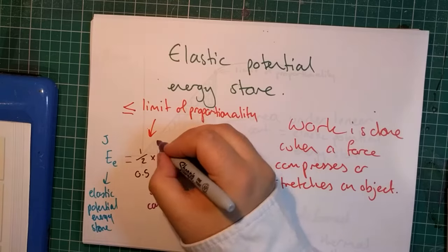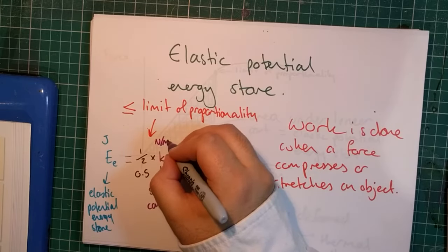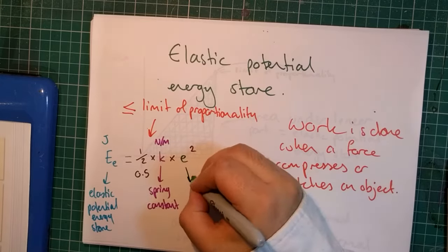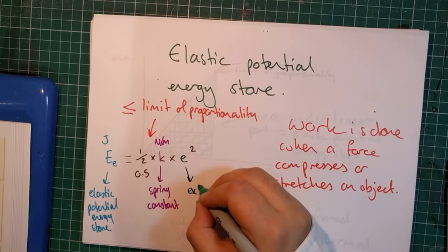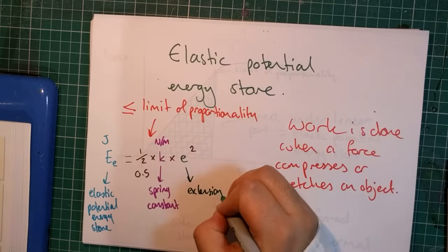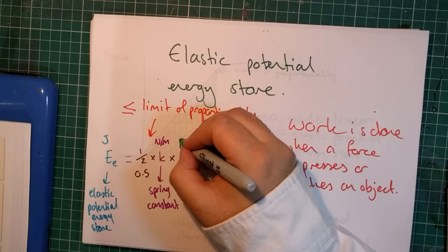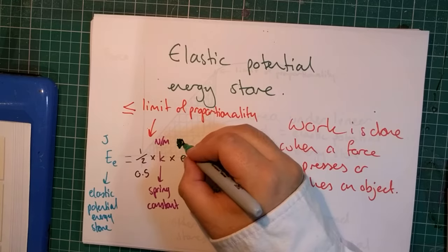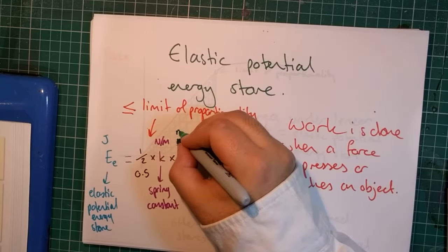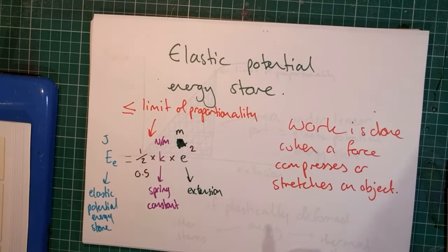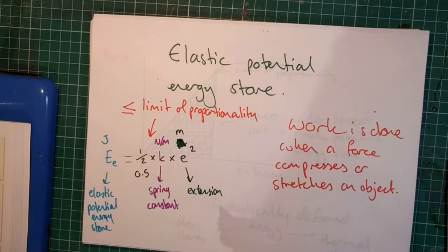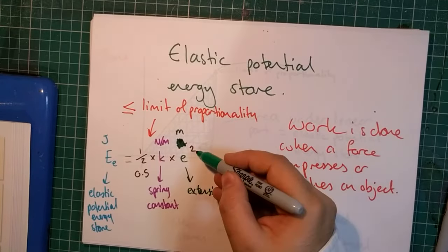That has units in newtons per meter. And then the extension has units that are in meters. I've drawn that rather poorly. Let's try that again. The thing to remember is that whatever your number for the extension, you have to square it, as it says there.